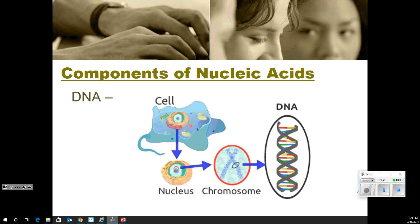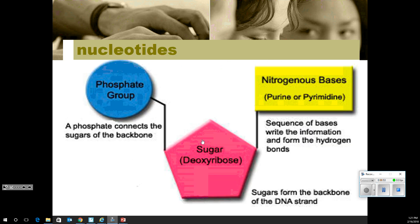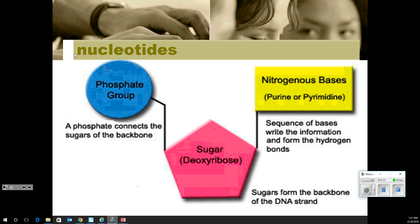As we look at components of nucleic acids, remember that inside the nucleus is where we get our DNA. DNA is part of chromosomes. Nucleotides are made up of three main parts: a phosphate group connecting to a sugar group, connecting to one of the bases — either a purine or a pyrimidine. A sequence of bases is what makes up the DNA strand. The phosphate-sugars make up the backbone of the DNA, connecting phosphate to sugar to phosphate to sugar, and it keeps going on.